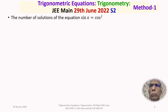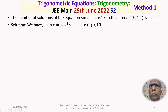Let us now discuss the solution of the problem in detail. We will solve this problem using two methods. In Method 1, we have the trigonometric equation sin x = cos²x, where x belongs to the open interval (0, 10).